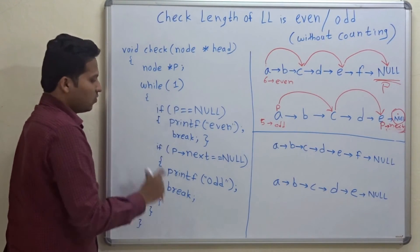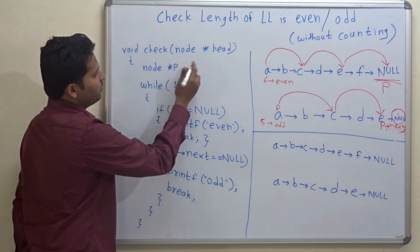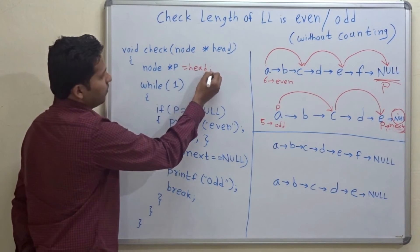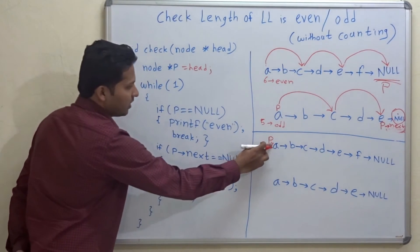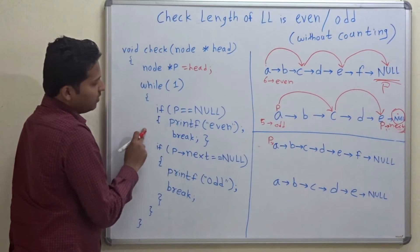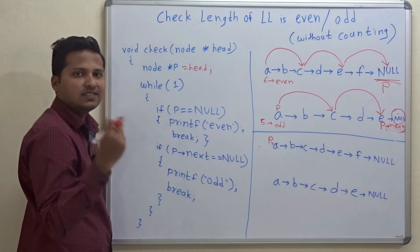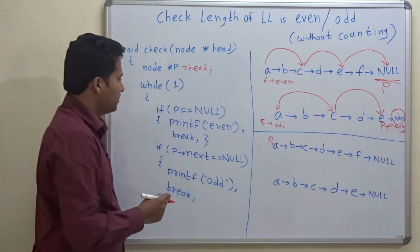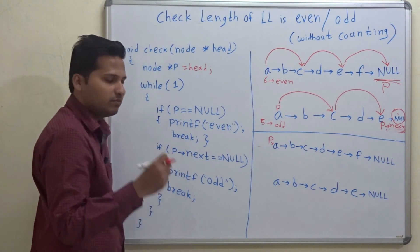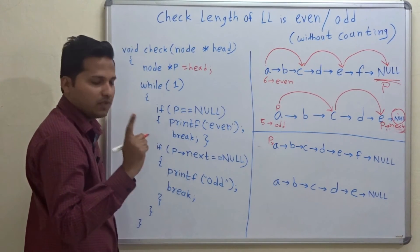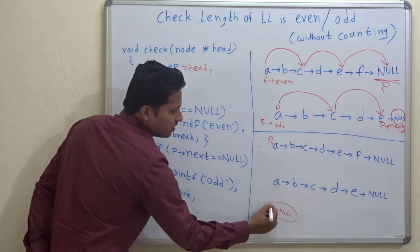So let's see the code here. We have passed the head and node star P, so P will now point to head. We will execute this code on this linked list. P will point to head. Inside the while loop, if P equals null — suppose we are given a null linked list — then obviously the length is zero and the length is even, so we print even. And if P->next equals null, meaning if the length of the linked list is one and only A is given, then its next will be null and this length will be odd.